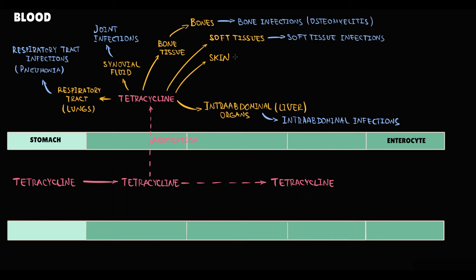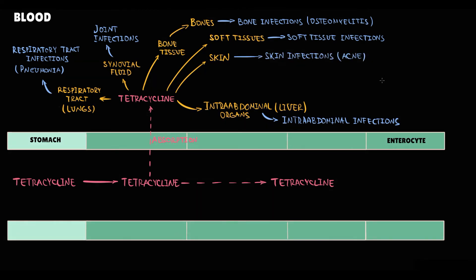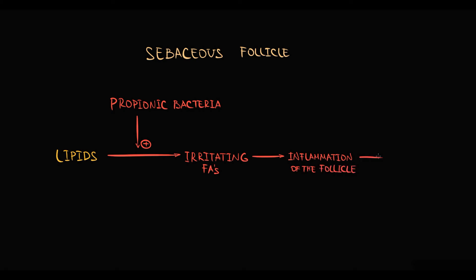Because tetracyclines easily enter into the skin, they can be used in treatment of skin infections, as acne for example. The problem with acne is that in sebaceous follicles resides propionibacteria that metabolize lipids into irritating fatty acids that cause inflammation of the follicle that manifests as acne. So once tetracycline enters into the follicle, it kills the bacteria, thereby the production of irritating fatty acids decreases, so inflammation decreases, and thereby the severity of acne decreases.